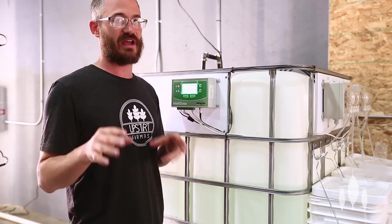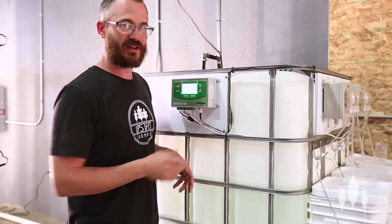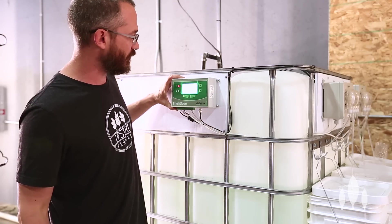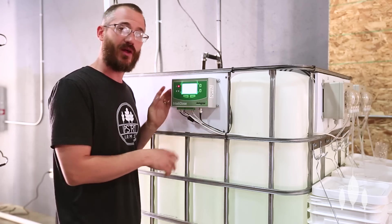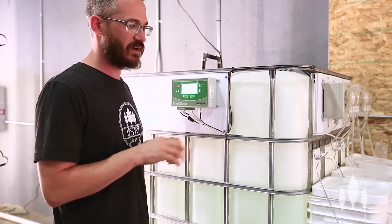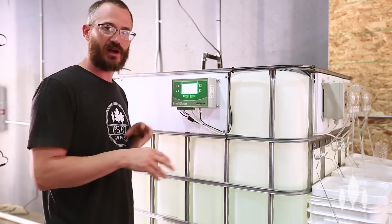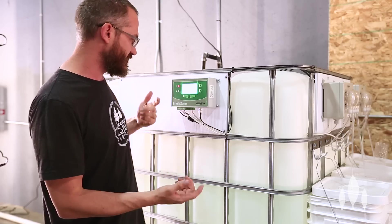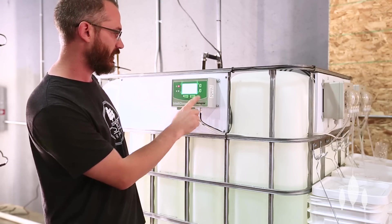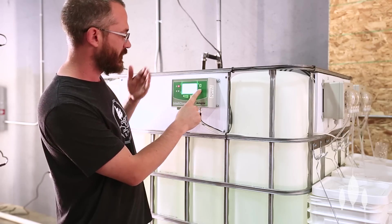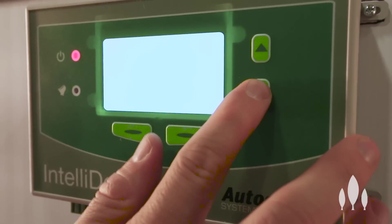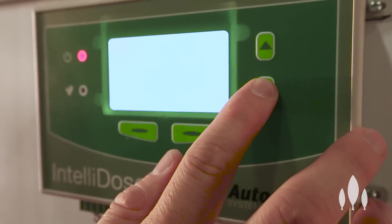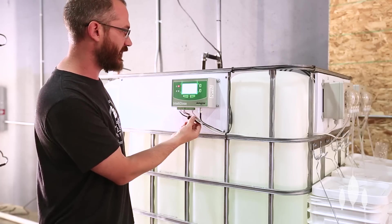So a dosing system usually has a couple different components, and the main one is kind of the computer. So this is the main computer here, and this is standalone. We can hook it up to a PC if we want and set things through a computer. But it's easy enough just to set here on the main menu, be able to do all of these different things on this little computer itself.